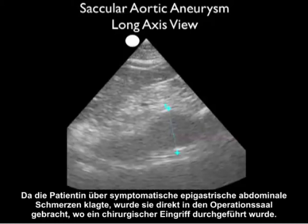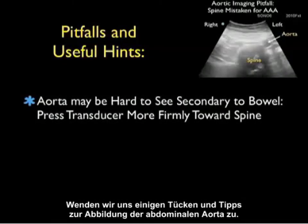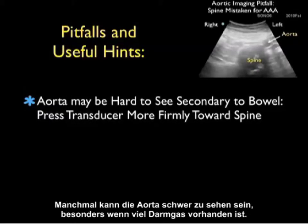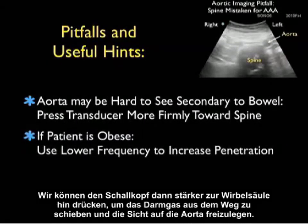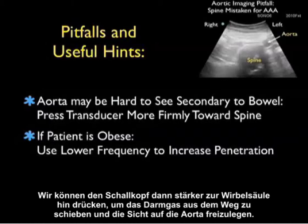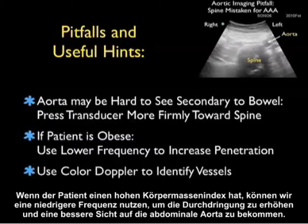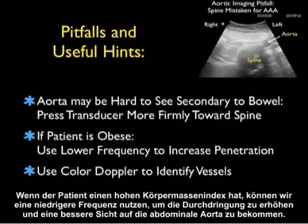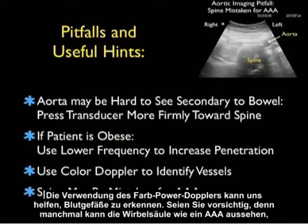Let's go over some pitfalls and useful hints for imaging of the abdominal aorta. At times, the aorta may be difficult to see secondary to excess bowel gas — we may press the transducer more firmly towards the spine to displace the bowel gas and get a look at the aorta. If the patient has a high body mass index, we can use a lower frequency to increase penetration. Using color Doppler can help us identify vessels. Be careful because there are times where the spine may look like a AAA, but close attention to the location of vascular structures anteriorly will clear that up.